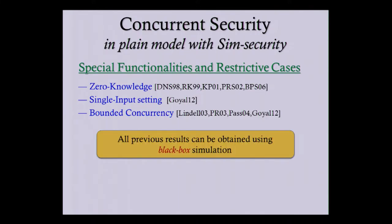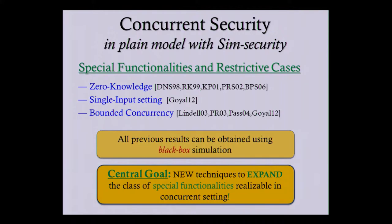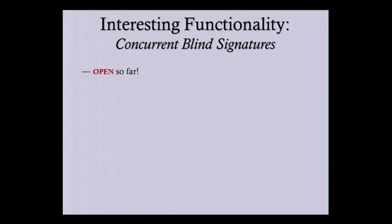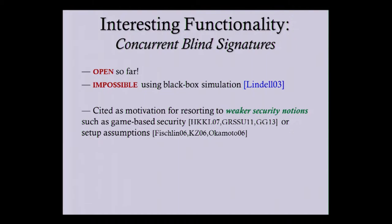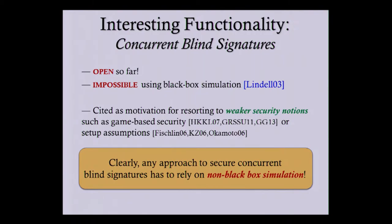All of these positive results can be obtained by just using black-box simulation. The central goal of this work is to develop new techniques to expand the class of functionalities that can be realized in the concurrent setting. Towards this goal, let me look at the special functionality of concurrent blind signatures. Whether this functionality can be realized in the concurrent setting is open so far. Long time back, Lindell showed a black-box impossibility for this functionality, saying no black-box simulation technique can give you concurrently secure blind signatures.